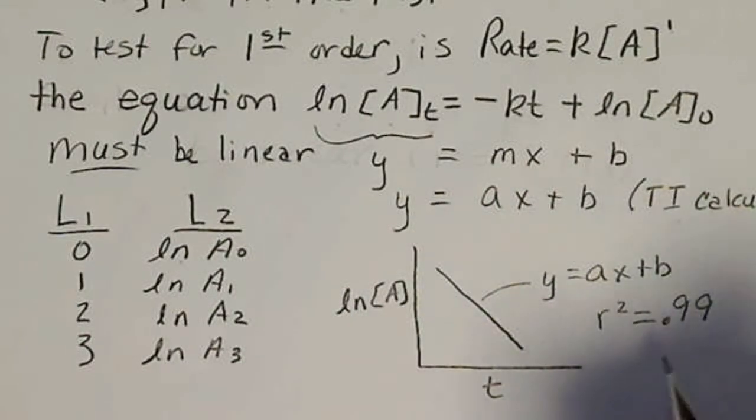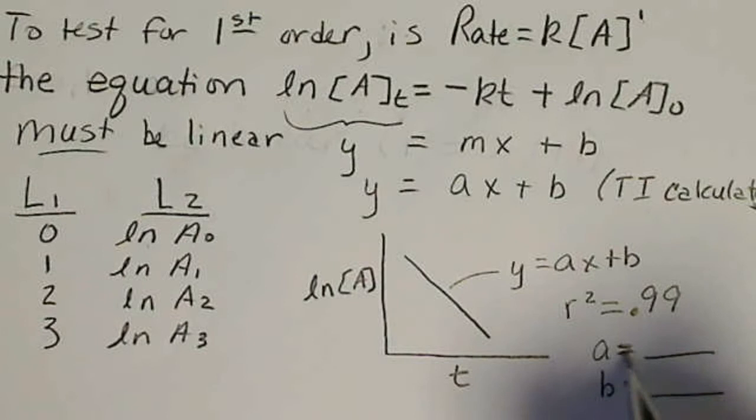And the slope, if we get this on the calculator, A is going to be given and B is going to be given. So A is the slope of the line.